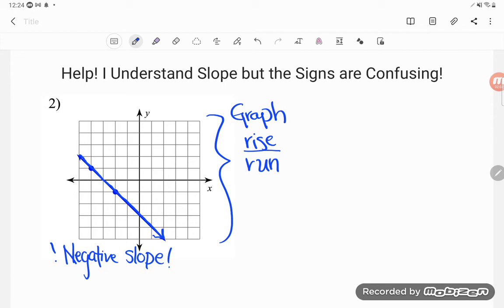If we could just count how much this graph is rising—and I wish you could see my hands when I said that because this line isn't really rising, it's falling—but how much the line is rising and then count how much it's running, we can make a fraction out of those numbers.